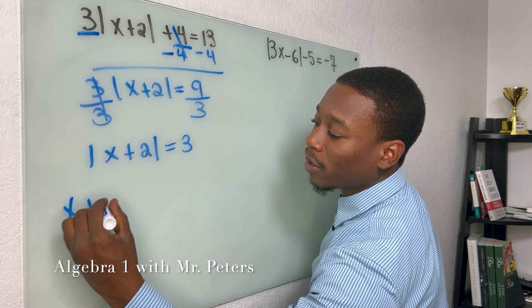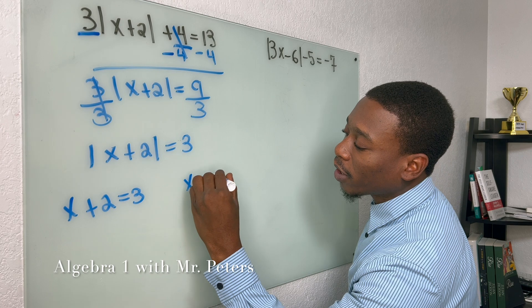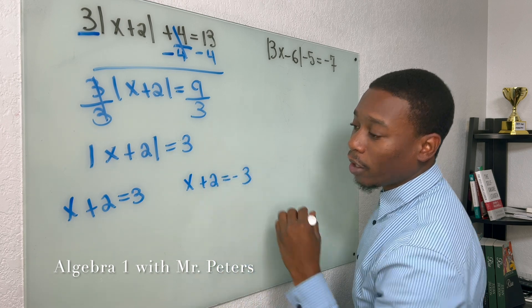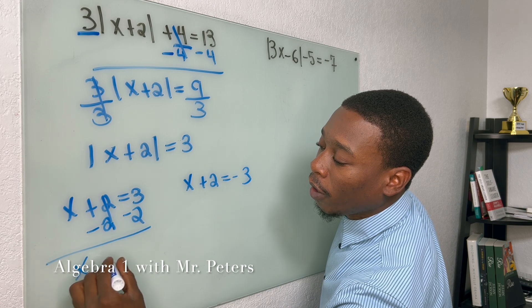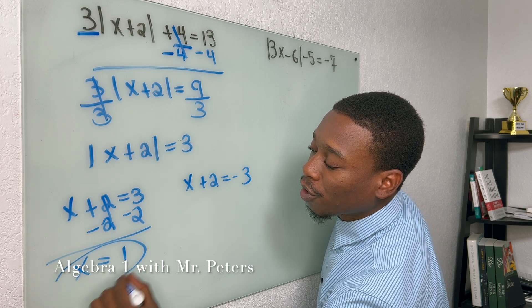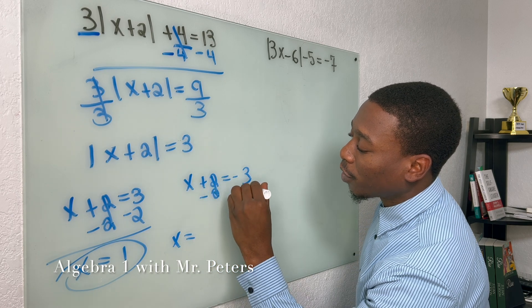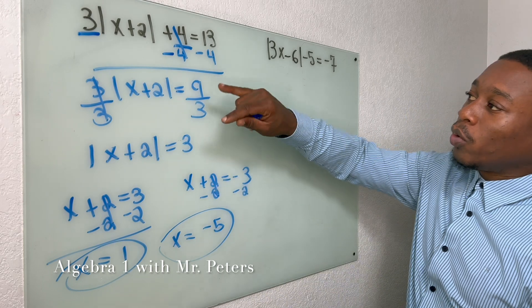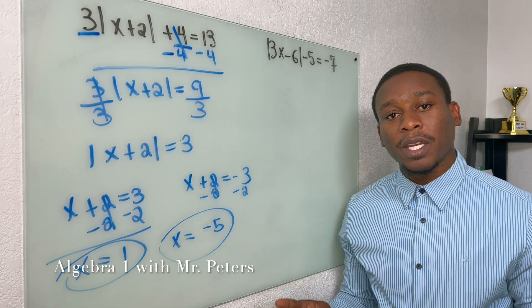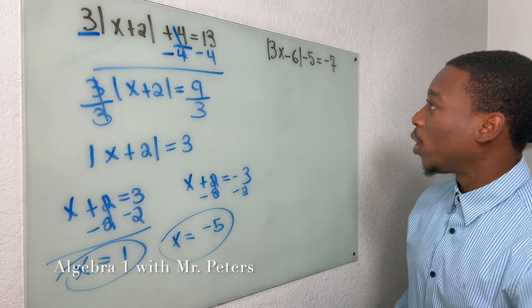So we drop our brackets, x plus two is equal to three, and then we rewrite our second equation, make sure it's negative, and then now we solve like a regular equation. x is equal to one or x is equal to negative five. When the absolute value is not by itself, we have to get it absolutely by itself before we can create our equations.